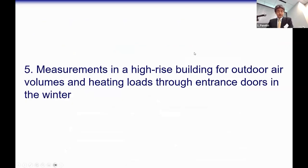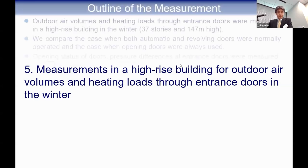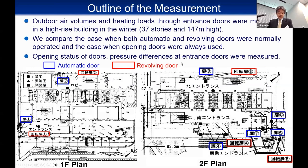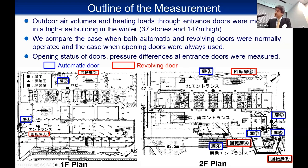The measurement results show the relationship between pressure difference and air infiltration volume. The results are equivalent to air tightness of exterior walls of about 1.25 to 1.67 square centimeters per square meter, which means the exterior walls of this building have average air tightness. Lastly, I'm going to explain measurements in a high-rise building for outdoor air volumes and heating loads through entrance doors in winter.